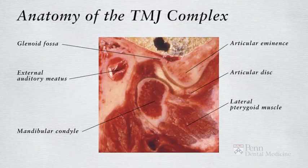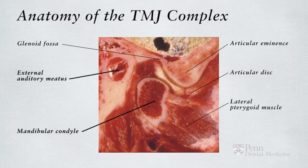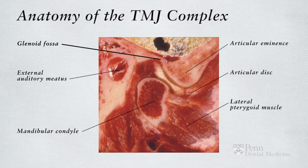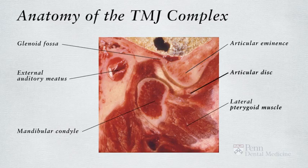We will now review basic anatomy of the TMJ complex. The mandibular condyle is the portion of the mandible that is part of the TMJ complex and is capable of rotational and translational movement. Note the relative round, smooth structure of the condylar head. The glenoid fossa is part of the temporal bone of the skull that constitutes part of the TMJ complex. The articular eminence is a bony structure that serves as the ramp for condylar disc movement. The bow-tie shaped articular disc between the articular eminence and the condyle has a major role in TMJ function. The lateral pterygoid muscle inserts directly into the TMJ complex.